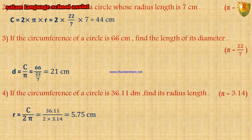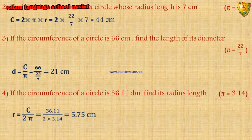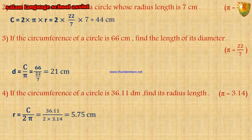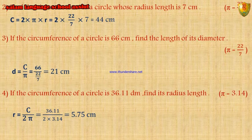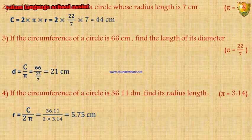Number 2: find the circumference of a circle whose radius length is 7 cm, using π equals 22 over 7. Circumference equals 2 times π times r, equals 2 times 22 over 7 times 7, equals 44 cm.